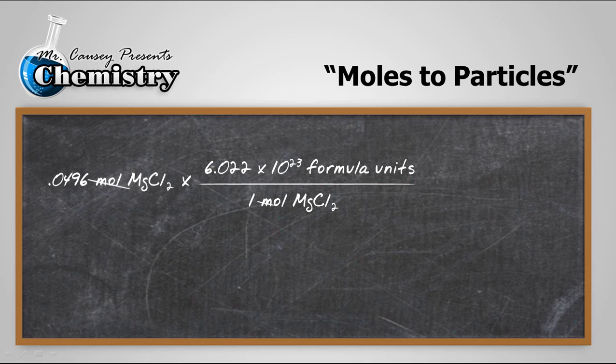Make sure moles cancel out, then plug and chug, and our answer should be 2.99 times 10 to the 22 formula units of magnesium chloride with three sig figs.